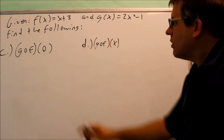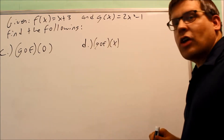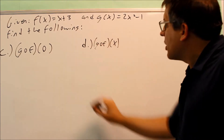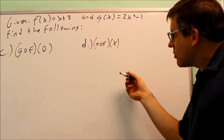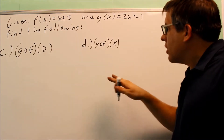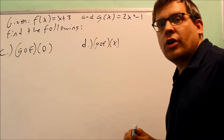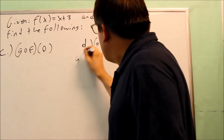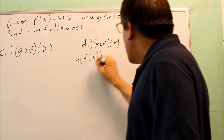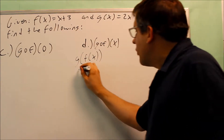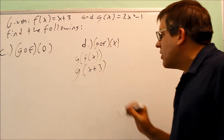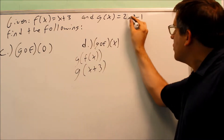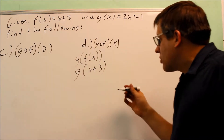Now we're going to do parts c and d. We have g of f of 0 and g of f of x. Like before with parts a and b, I'm going to start by doing g of f of x since it's asking us for that anyway. Once I get that answer, I'll just put my 0 in and that would be my final answer for part c. So let's start with d. This is g of f of x by using the definition. f of x is x plus 3 — I'll put that inside there in place of the f of x.